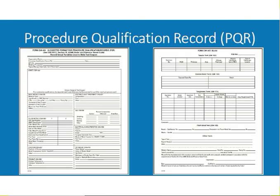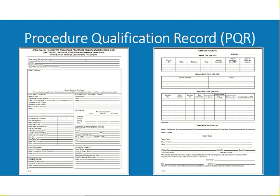Here is the draft copy of the procedure qualification record. We need to prepare all inputs and then prepare the final procedure qualification record. Starting from QW-402, which covers joint variables: QW-402.1 is groove design, QW-402.4 is backing material, QW-402.10 is root spacing, and QW-402.11 is retainers. Joint variables are the same for GTAW and GMAW — all are non-essential variables.